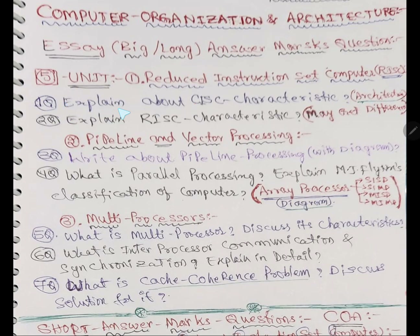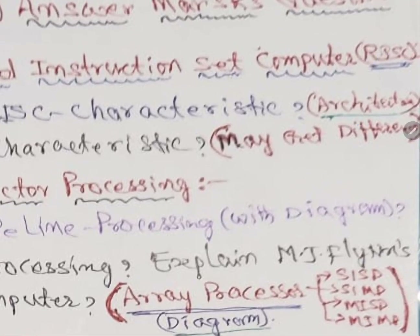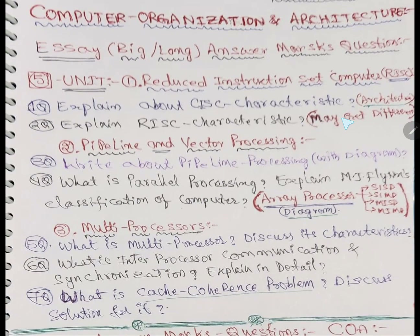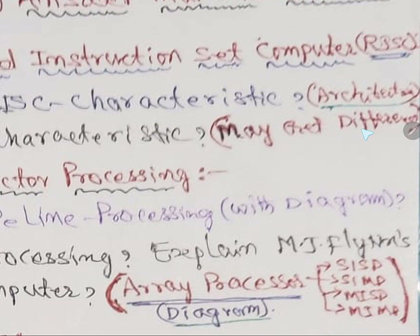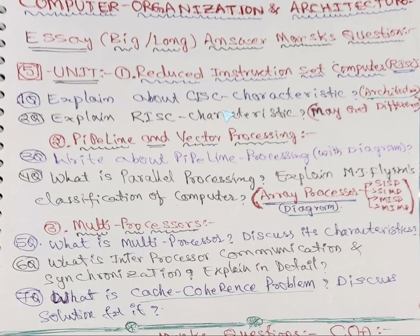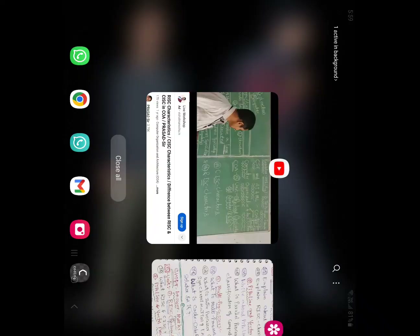Now the question: 'Explain about CISC characteristics.' It can be asked separately, or sometimes as 'Explain CISC architecture.' I missed the architecture part and have already shot that separately. So there are two questions: explain RISC architecture and its characteristics, and explain CISC architecture and its characteristics. Sometimes he may ask for the difference between the two — then write two diagrams and characteristics. You can find links in my description box.